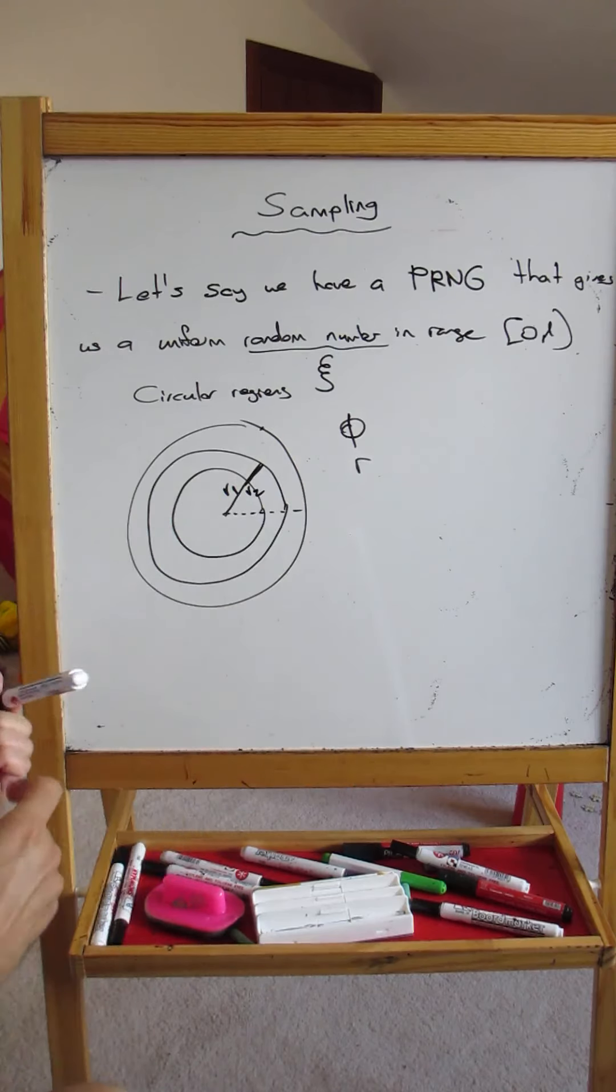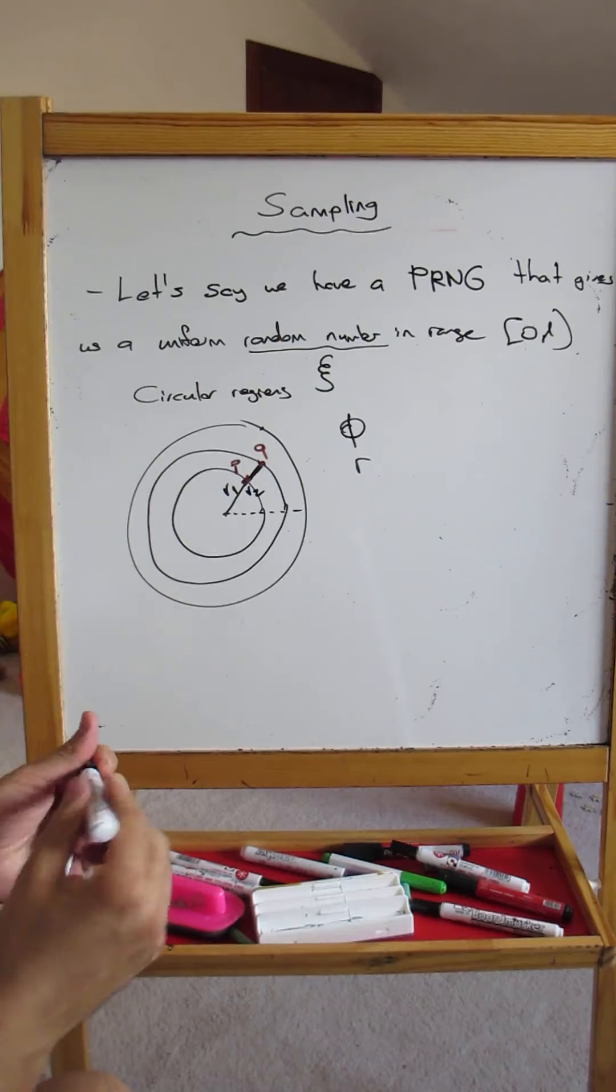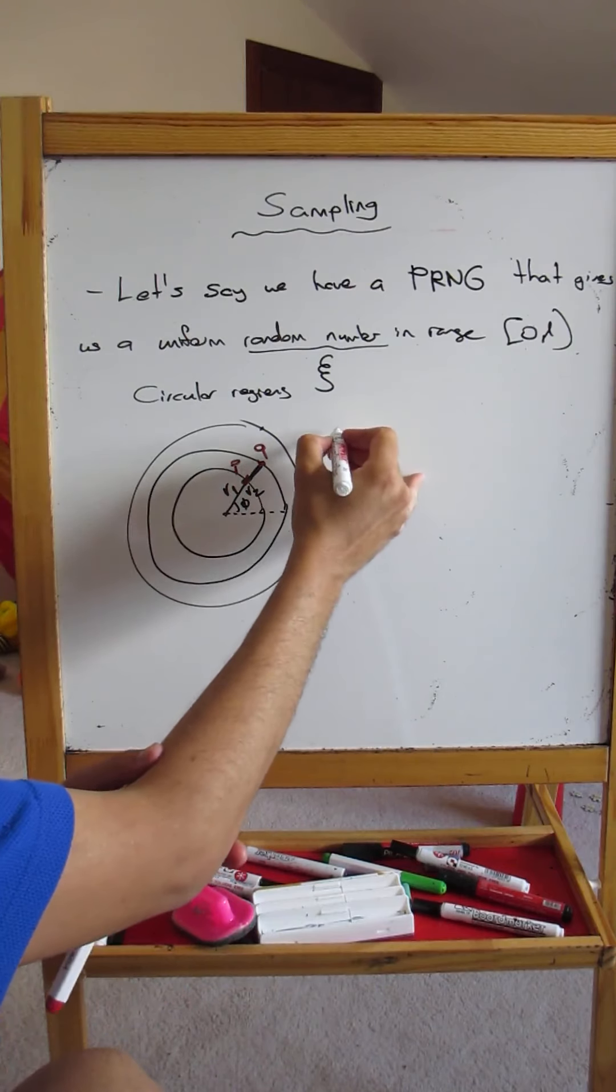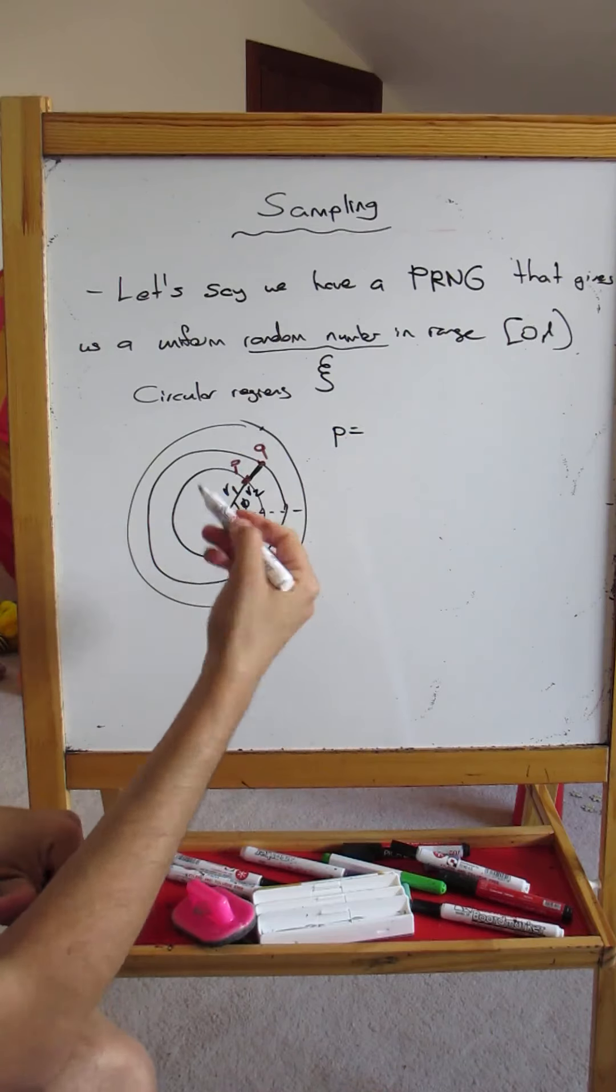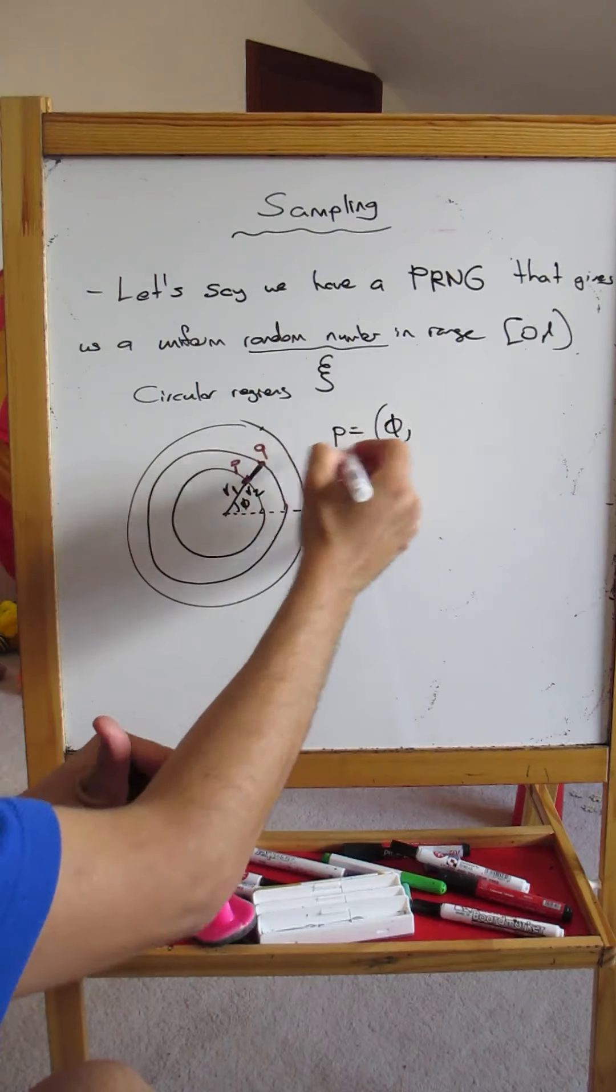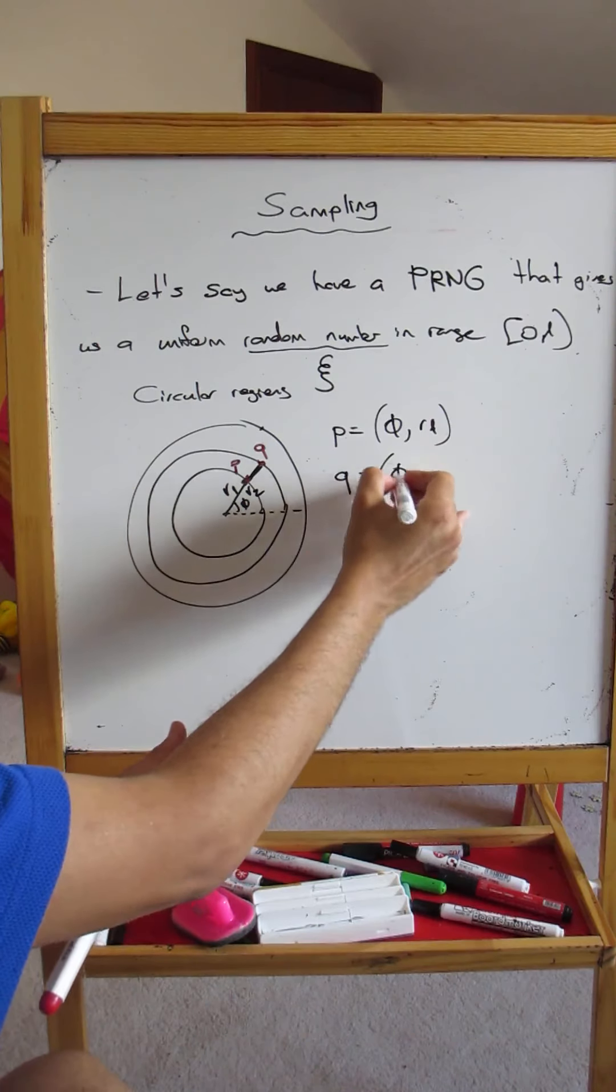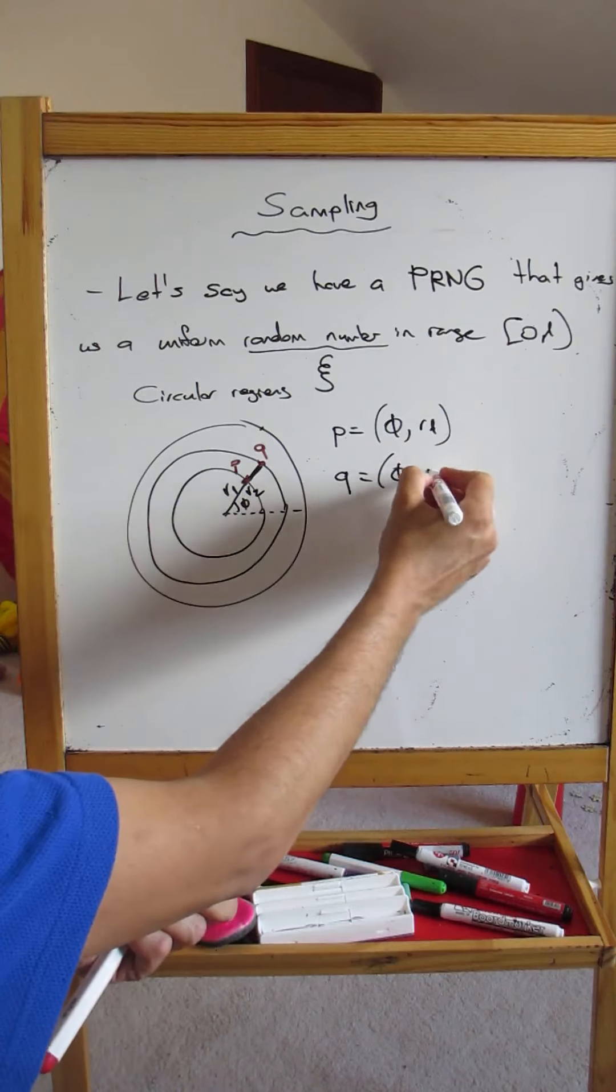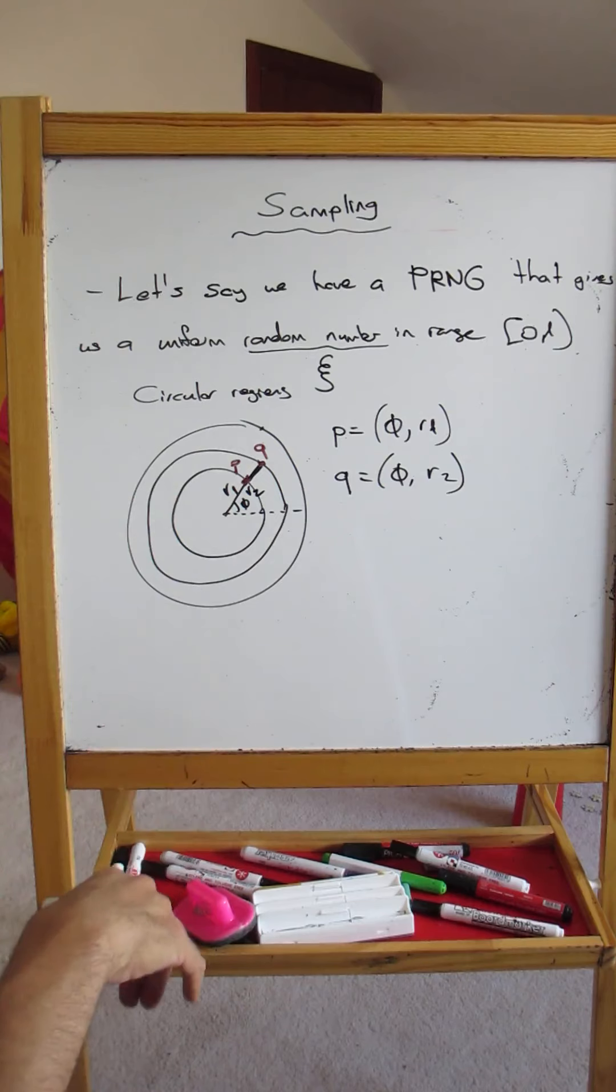Every point on the disk can be identified by using these two parameters. This point here, let's call this point P and let's call this point Q. So P is equal to - the parameters for P are phi and r1, and Q, the parameters for that are phi and r2. Every point can be distinguished by its polar coordinates.